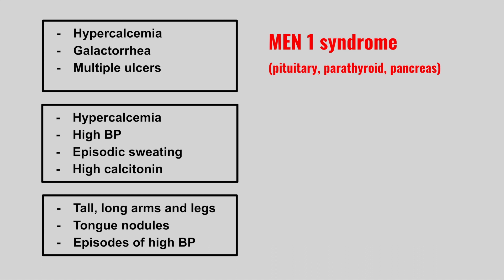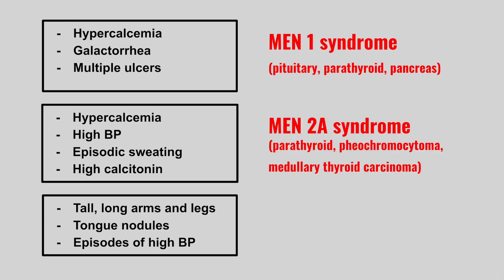The next patient has hypercalcemia, high blood pressure, episodic sweating, and high calcitonin levels. This is MEN-2A syndrome, where we have parathyroid involvement, pheochromocytoma, and medullary thyroid carcinoma. The episodic hypertension and sweating are part of the pheochromocytoma presentation, and the high calcitonin is due to the medullary thyroid carcinoma.